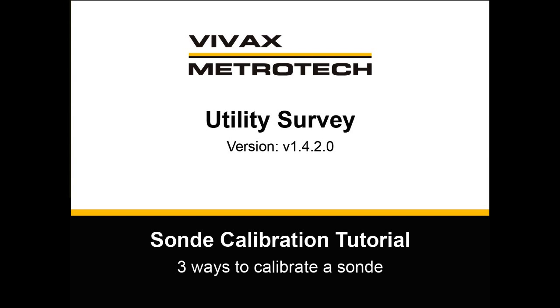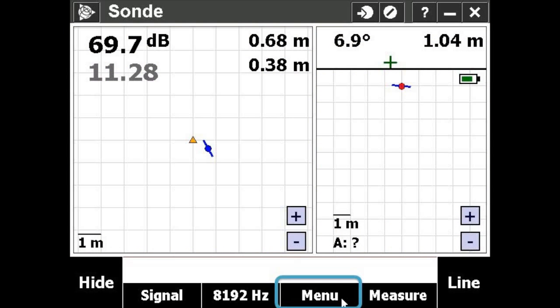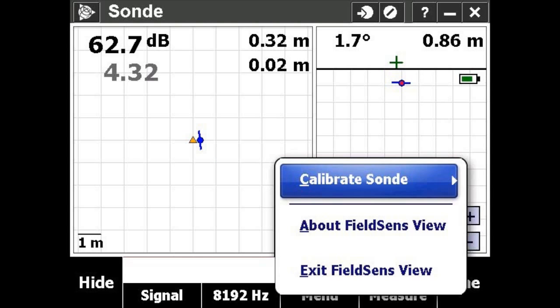In this tutorial you'll learn three ways to calibrate a sonde before using it to determine the location of a utility line. From FieldSense, select menu and then calibrate sonde.